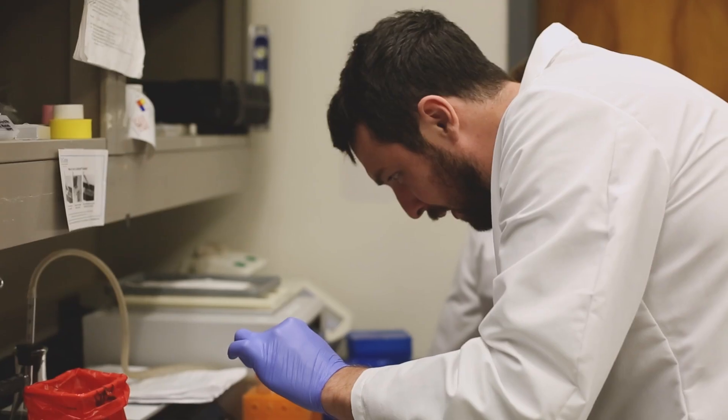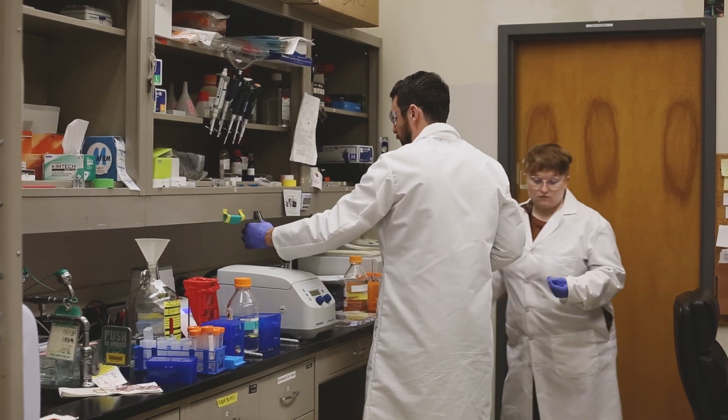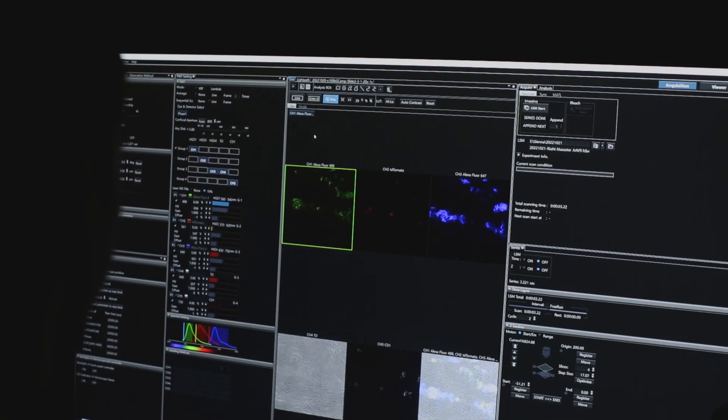We use a genetically-encoded calcium indicator, and we have a particular set of neurons express this. When the neurons fire and calcium comes into the cell, this protein will fluoresce, so we can actually directly visualize it.